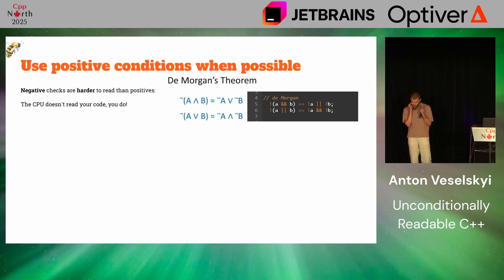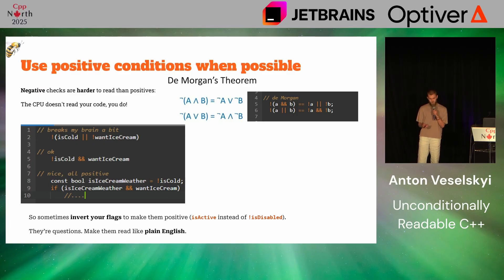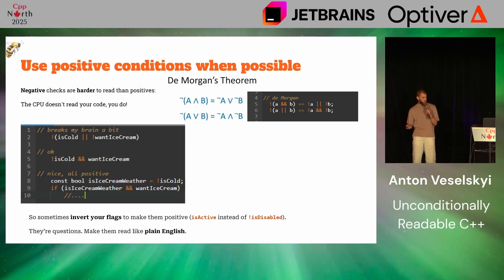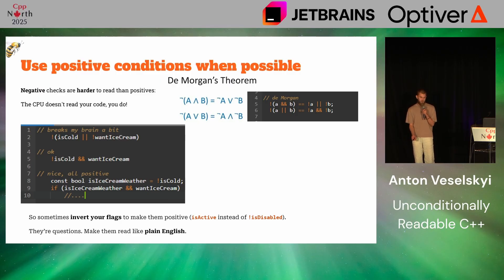Let's combine both. If you have a statement in parentheses that is negated, you can open it up with De Morgan's theorem and maybe it will be simpler. For example, 'not (it's cold or not want ice cream)' hurts the brain. But if you open it up, it's 'not cold and want ice cream.' Better. You can also introduce an extra variable — 'is cold' can mean different things, but for this specific check it means 'is ice cream weather?' So there's no downside in introducing an extra variable: if ice cream weather and I want ice cream, I guess I'll get some ice cream. Read it in English as English.